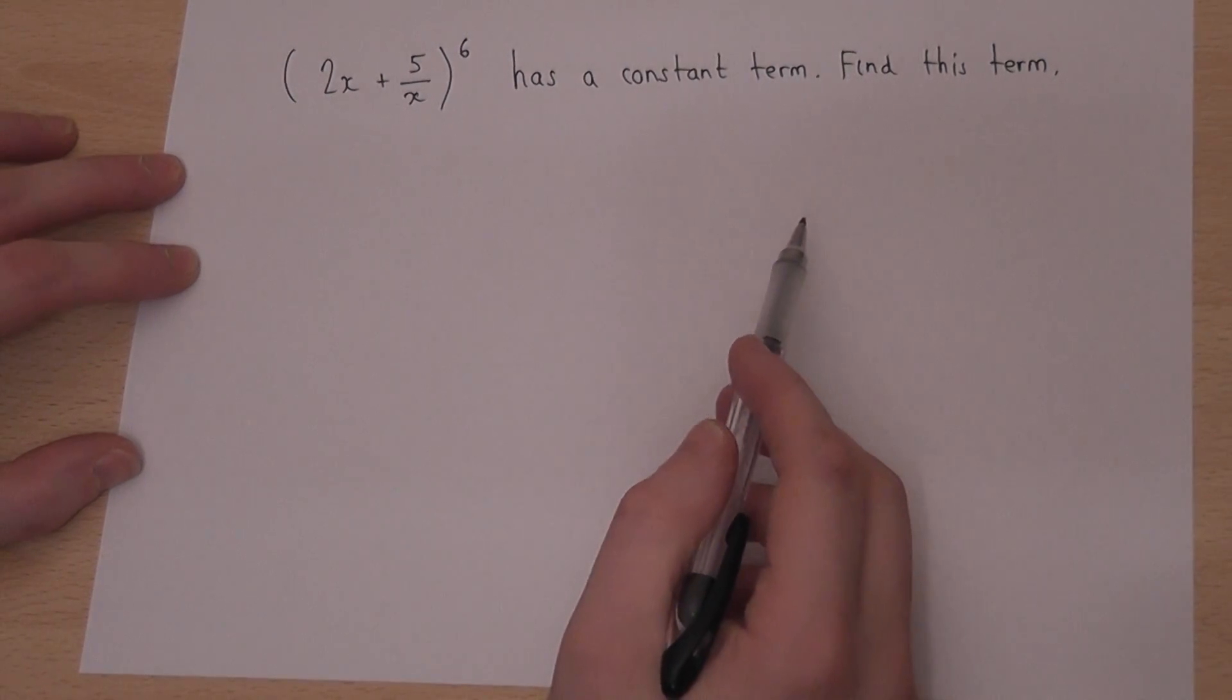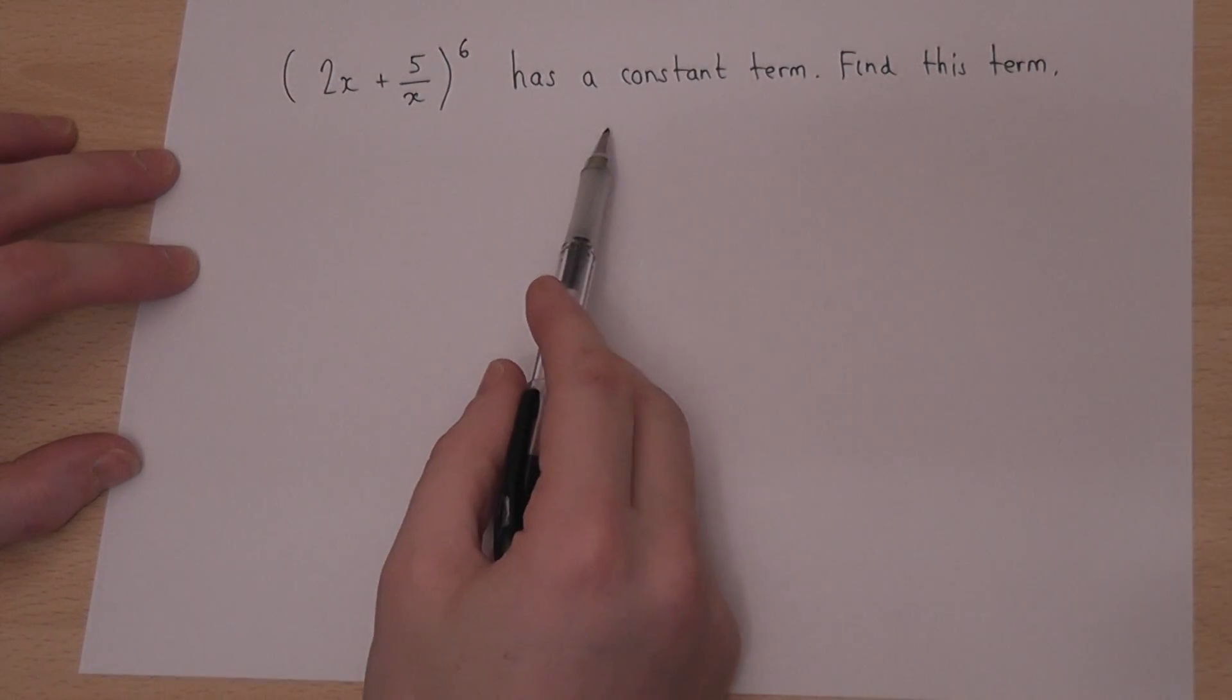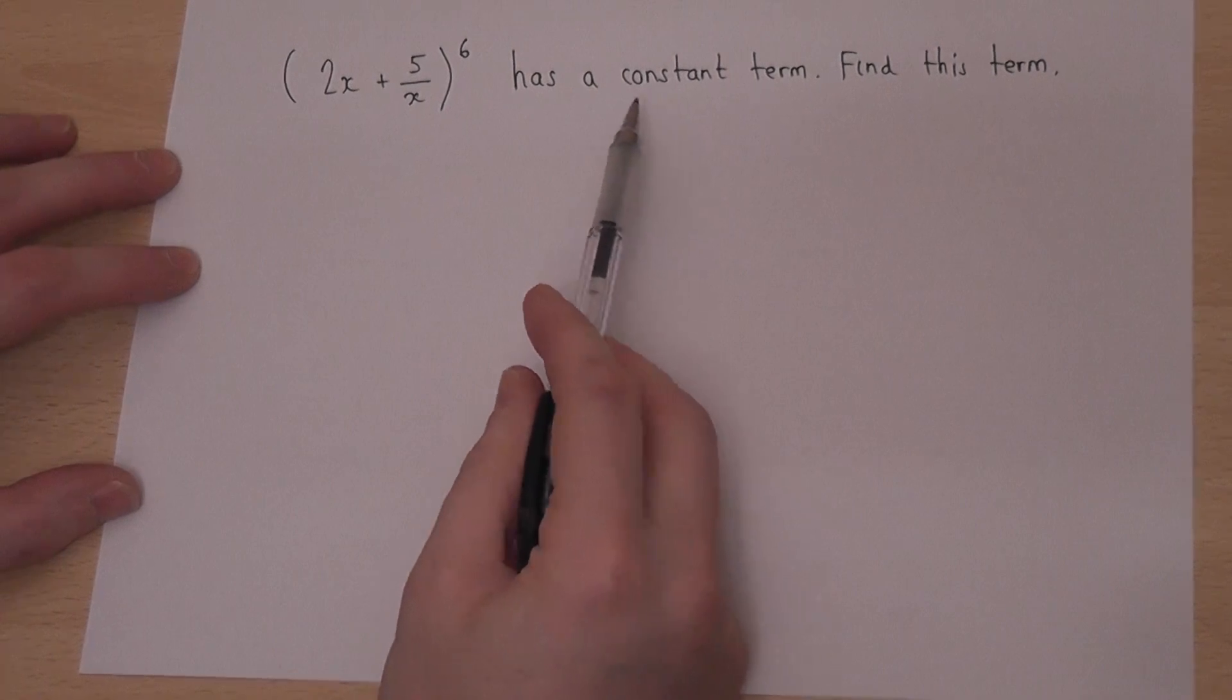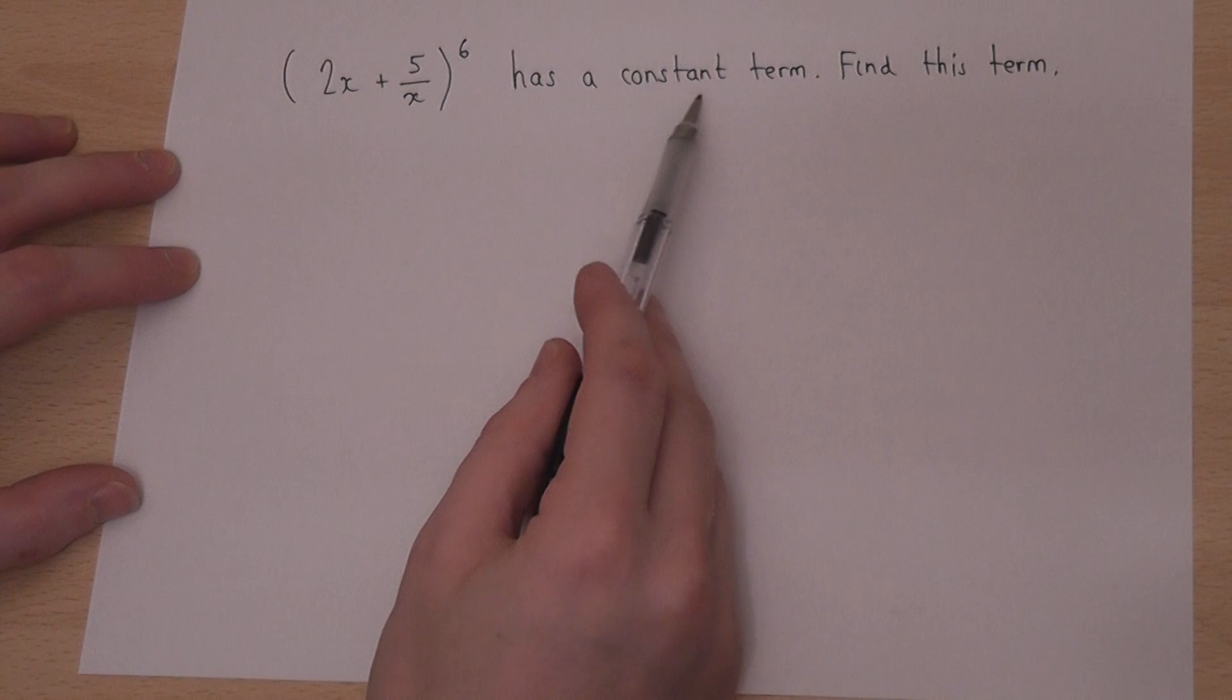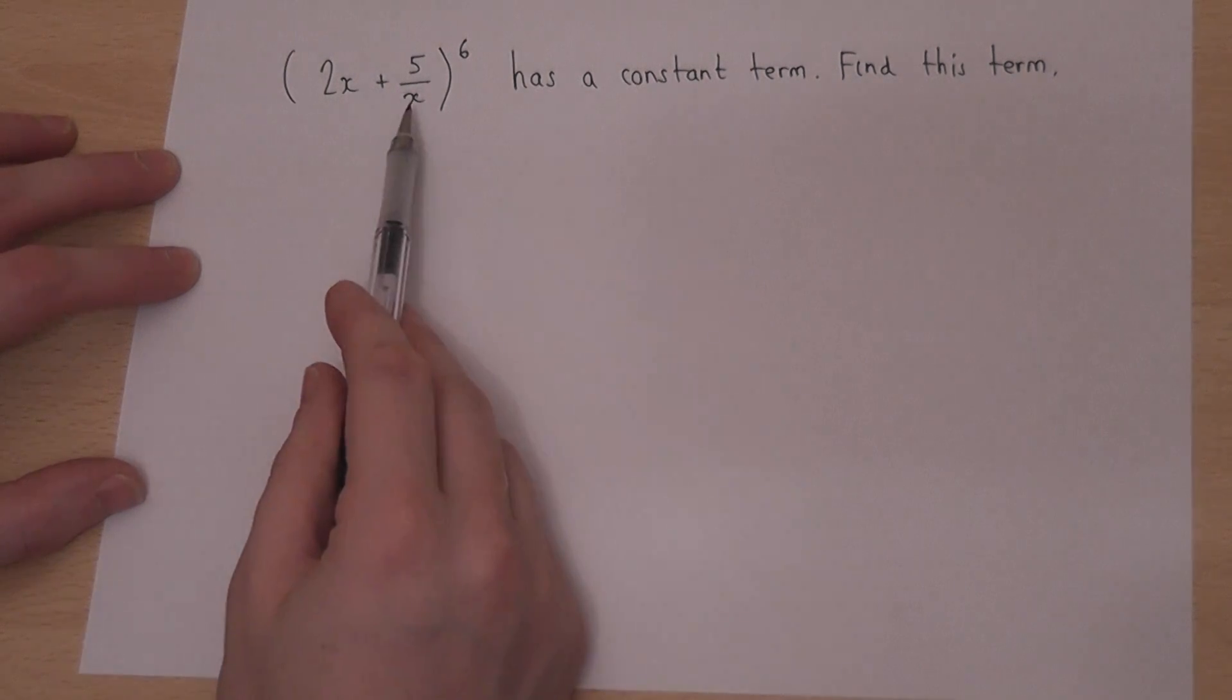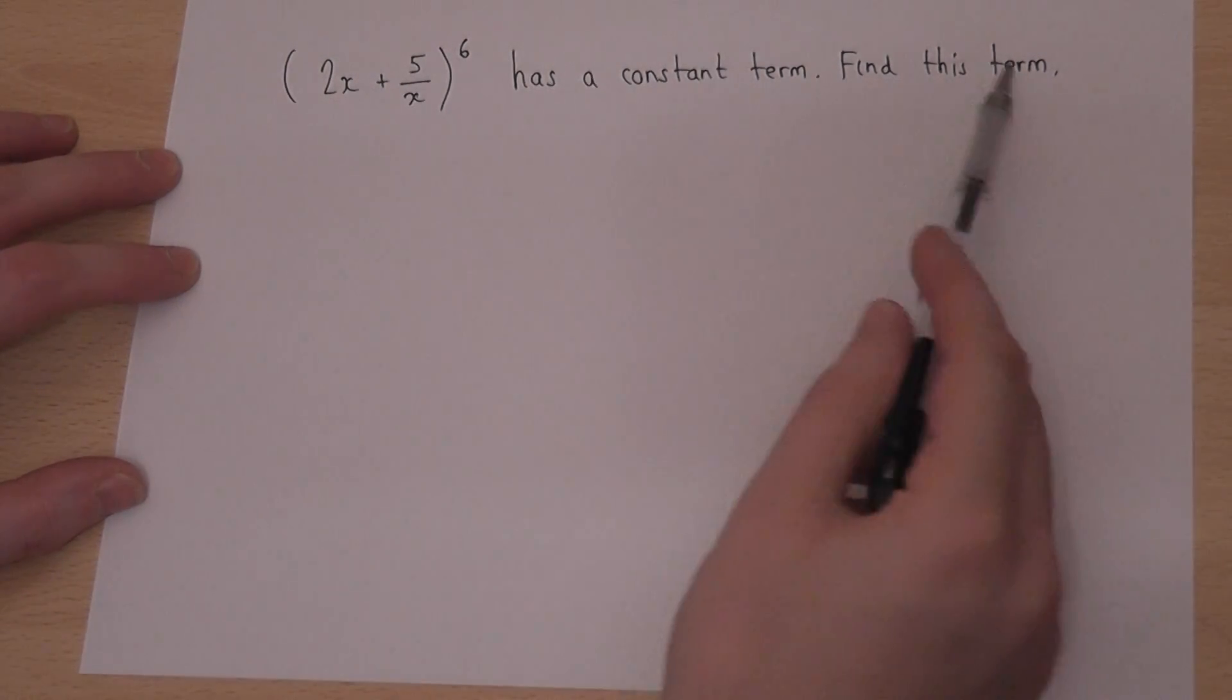This video looks at binomial expansion, and probably the hardest case for AS Maths where when we expand, one of the terms will not involve x, and the question is find this term.